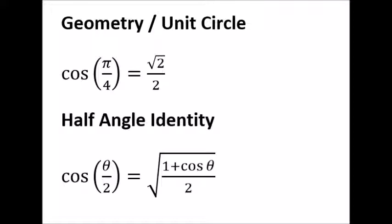From geometry, we know that cosine of pi over 4 is exactly equal to the square root of 2 over 2. That can also be found on a unit circle. This has been covered in previous lessons. We have also seen the half angle identity in previous lessons. Here we will employ it to our desired aim.